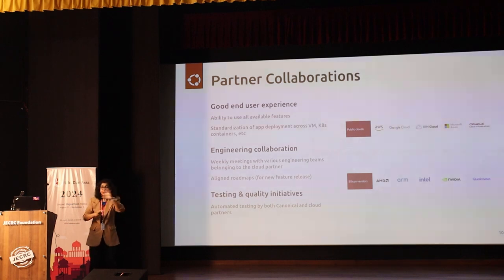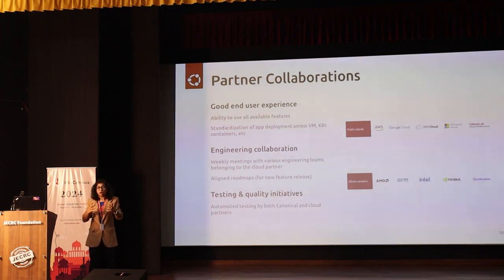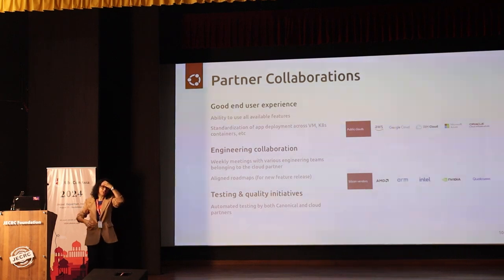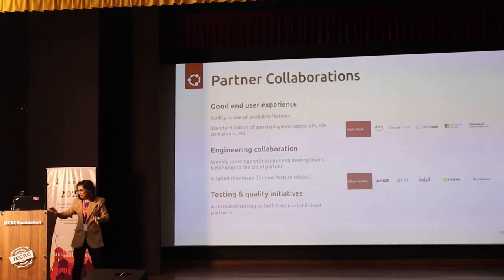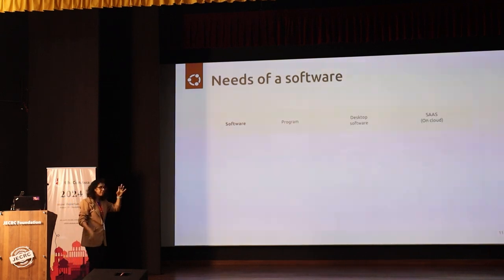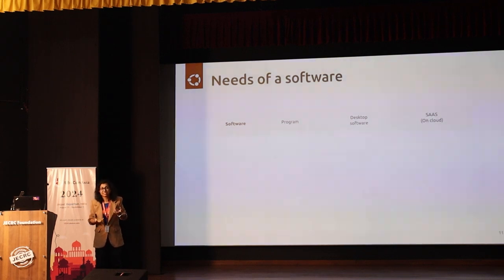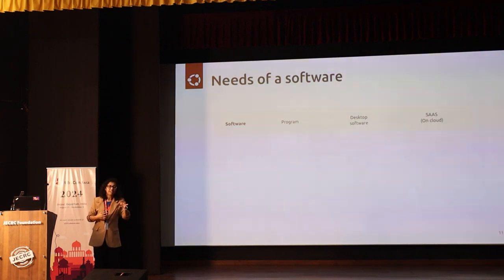We've seen what Ubuntu is, how it's different, who makes it, and how it's created. But what is the real need it serves? To understand that, let's consider the needs of software. Say you come up with some idea and write a small program for it. You expand it, create an actual software product, and finally it develops enough that you have customers — and you decide to put it on the cloud and make it a SaaS platform. That's an example of how an idea goes through software evolution.